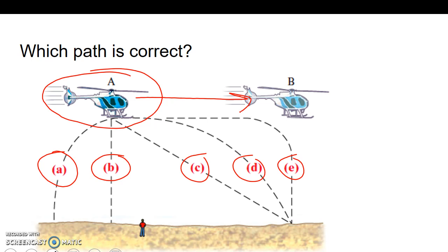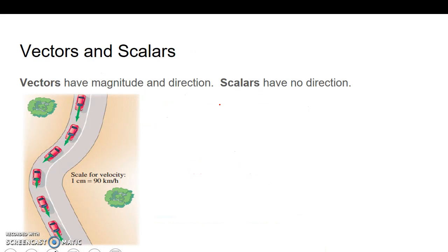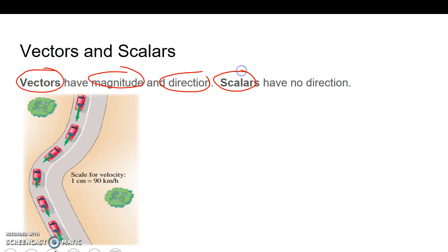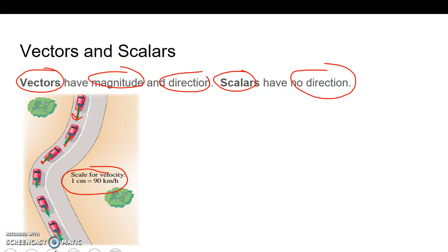The helicopter is moving in that direction. Vectors and scalars — just a review: vectors have magnitude and direction; scalars just have a magnitude and no direction. For example, in the car you see in this picture, these green arrows are velocity vectors. They show the scale to tell you how fast it's going, but also the arrow's point shows the direction. So these are velocity vectors because they have a magnitude and a direction.